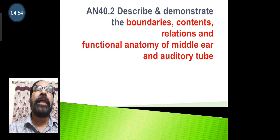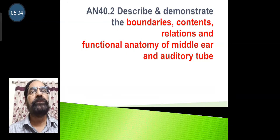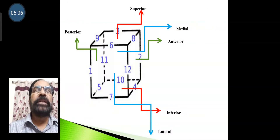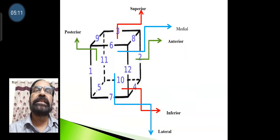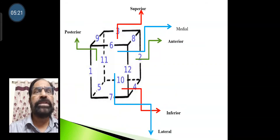We now go to an important competency: the boundaries, contents, relations, and functional anatomy of the middle ear and the auditory tube. The middle ear can be pictured like a matchbox with six sides — superior and inferior (roof and floor), medial and lateral, and anterior and posterior walls.